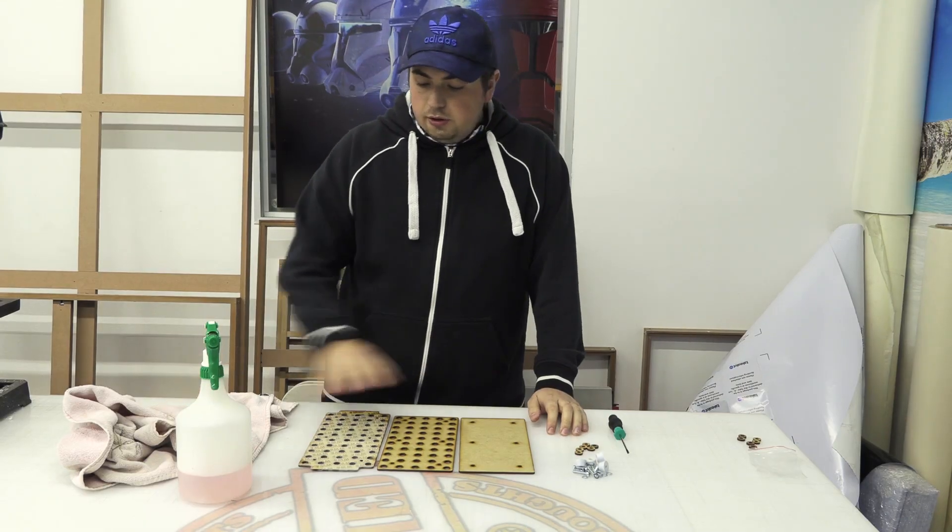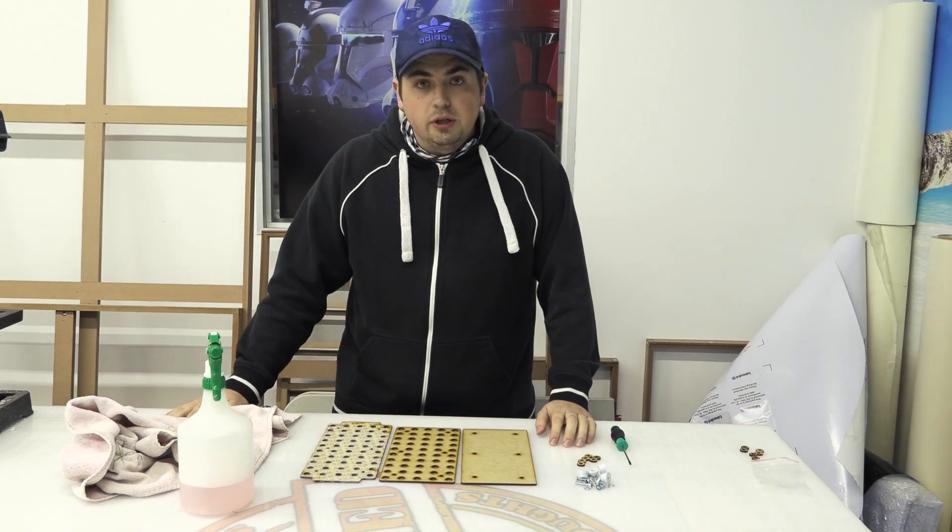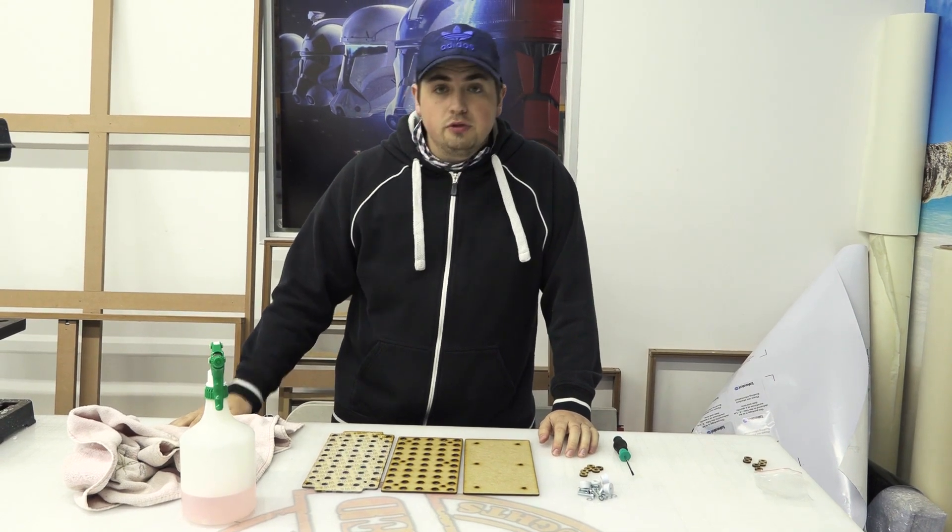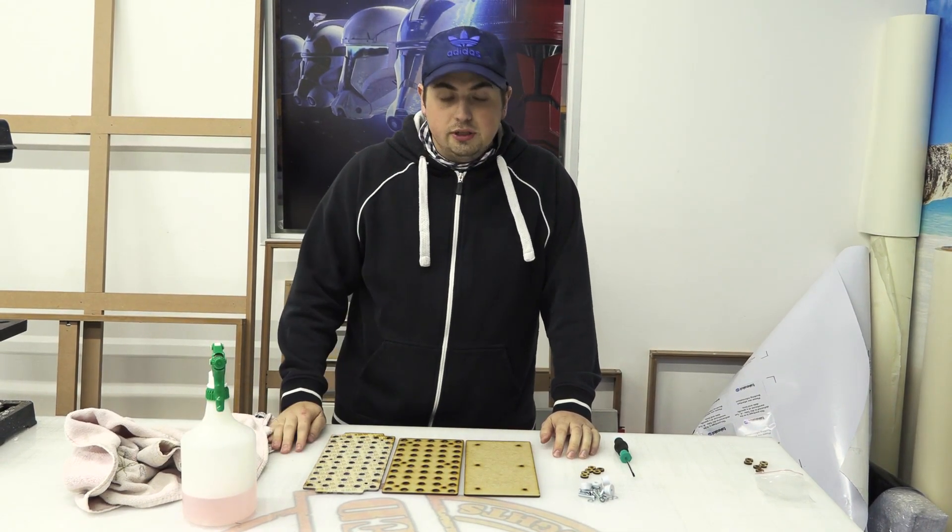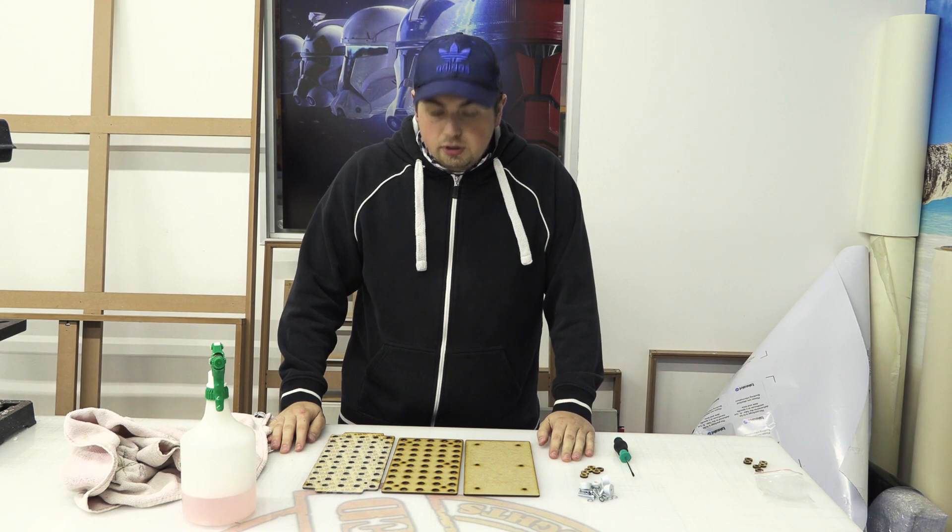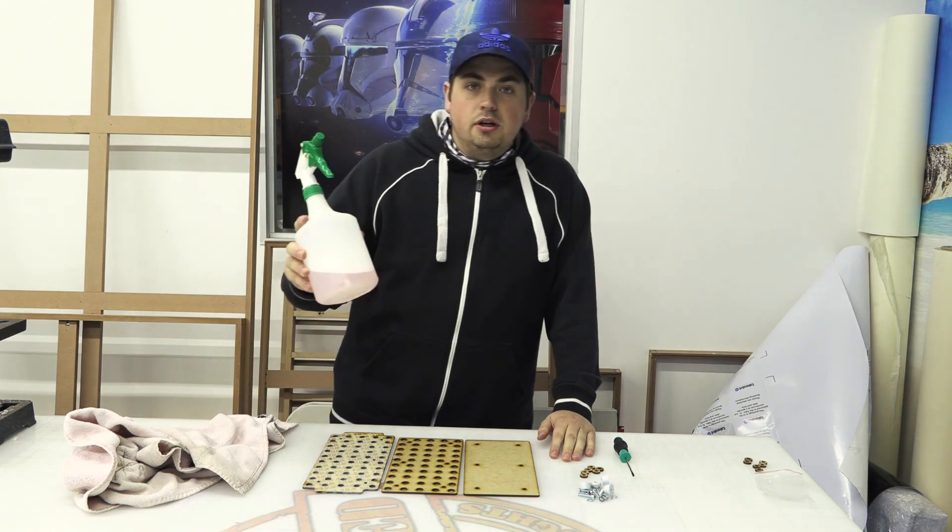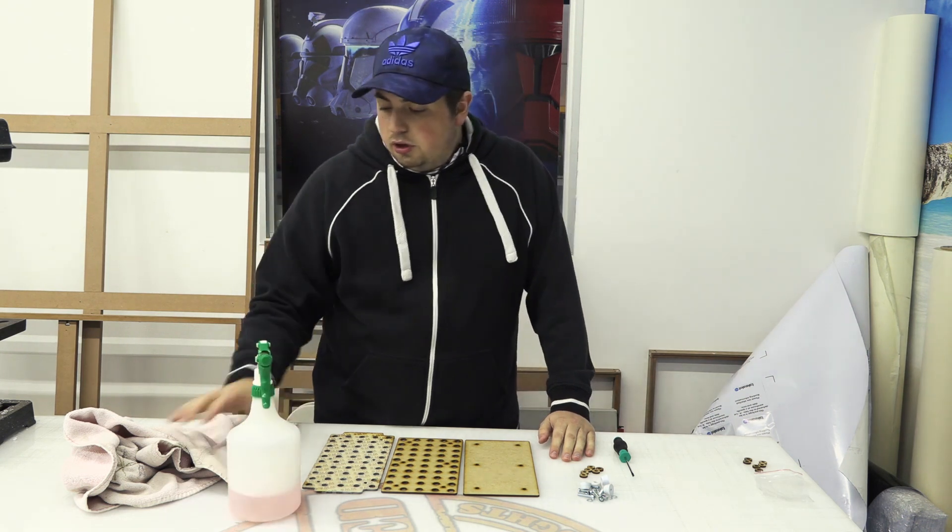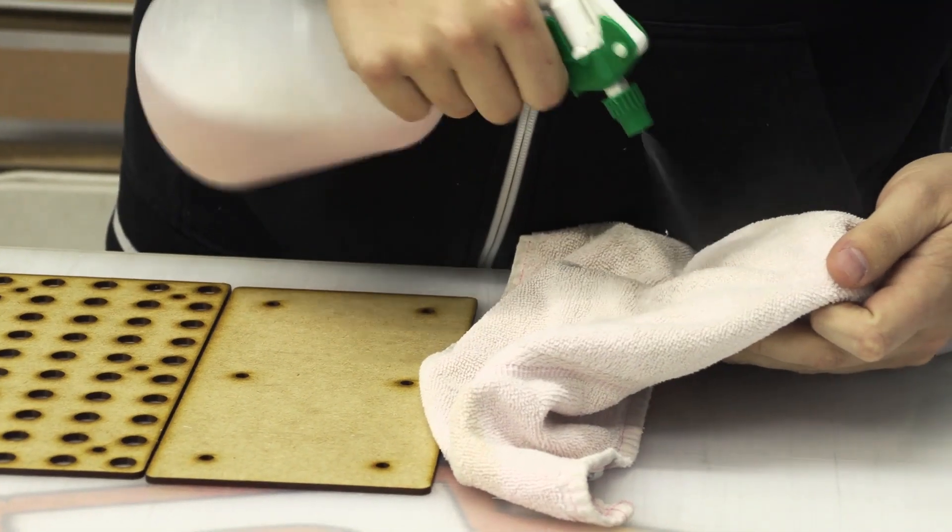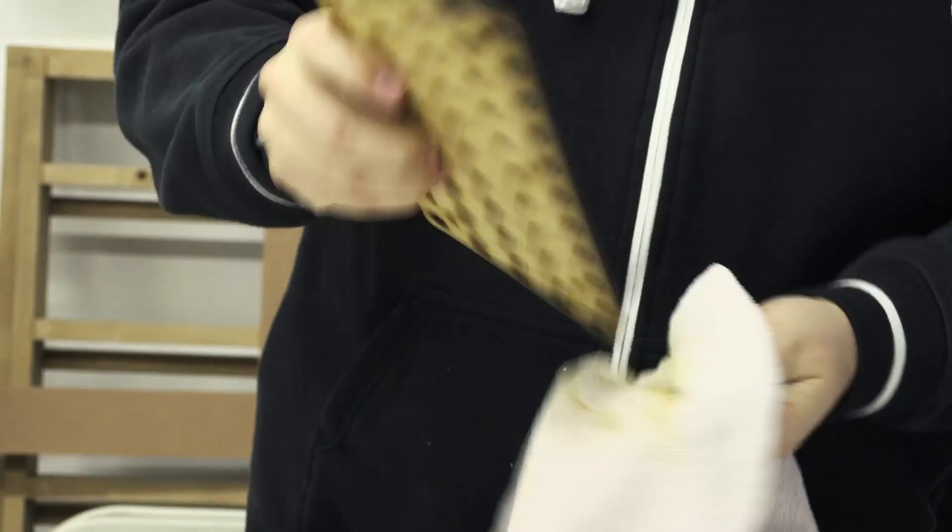So we've got all our components laid out here. I've got everything we need to make this, but first we need to clean off all the residue from the laser engraver to make sure that it looks like it's supposed to. I'm just going to use a bit of Sunlight liquid and some water with a cloth. That's basically all you need to do—just wipe off all the excess residue.